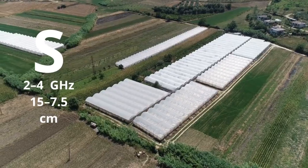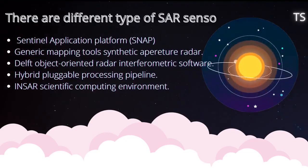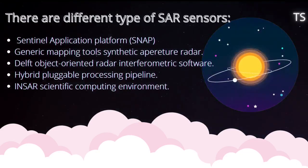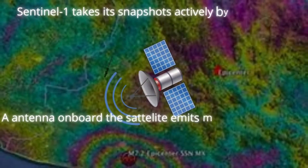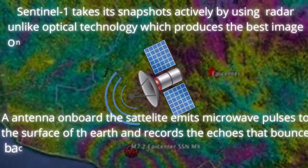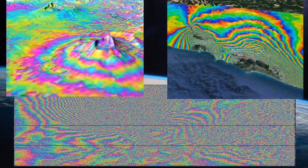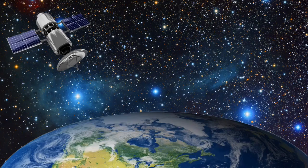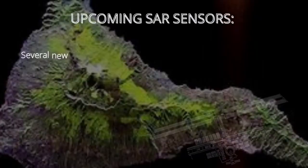Further, there are various sensors on SARs that each have different functions. One important one among them is interferometry SAR, or InSAR. An antenna on the satellite emits microwave pulses to the surface of the earth and records the echoes that bounce back. The images captured by InSAR are called interferograms, and this can be achieved at night or in cloudy weather, as these microwaves can penetrate through clouds.